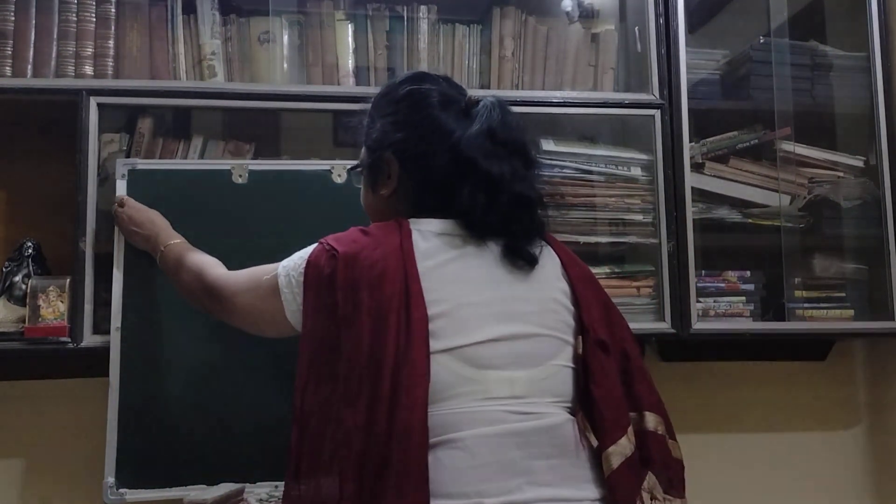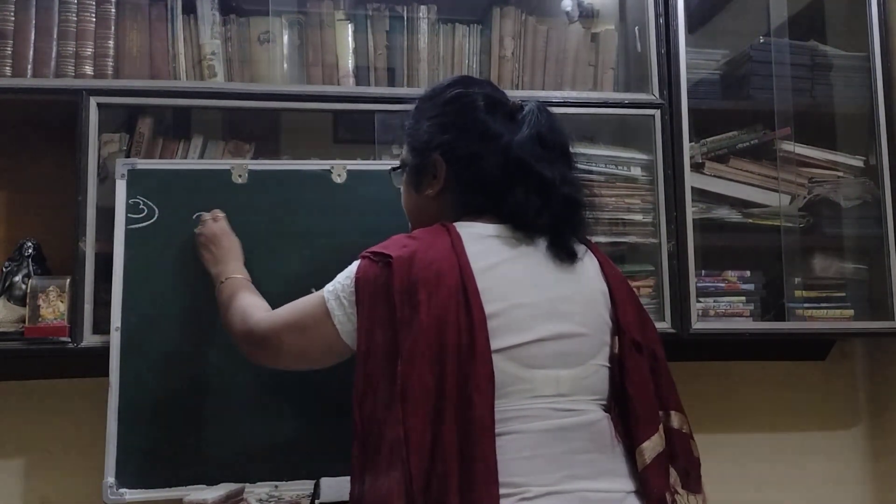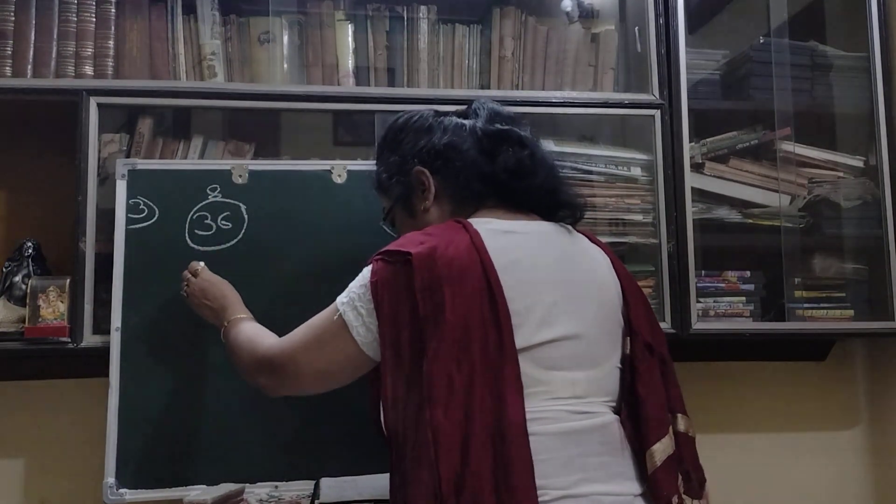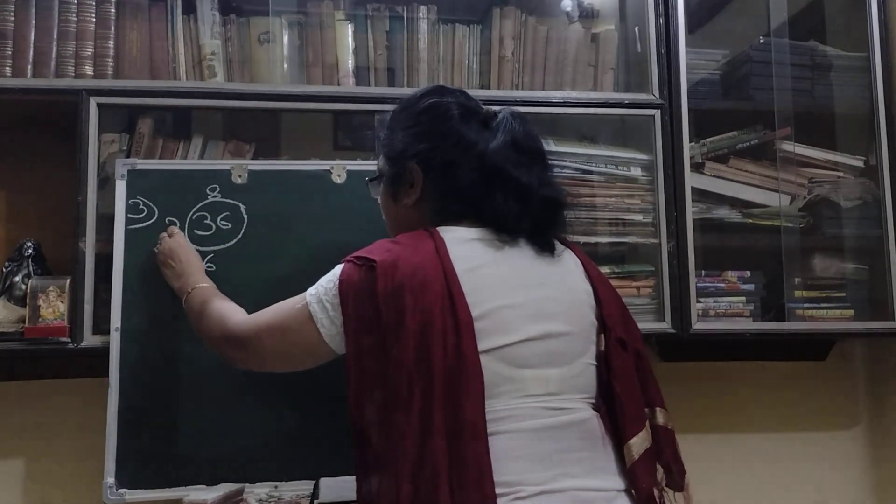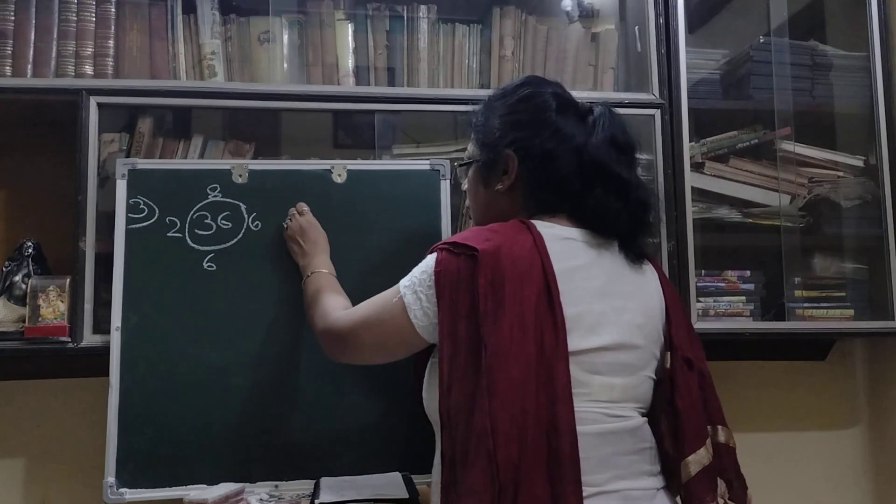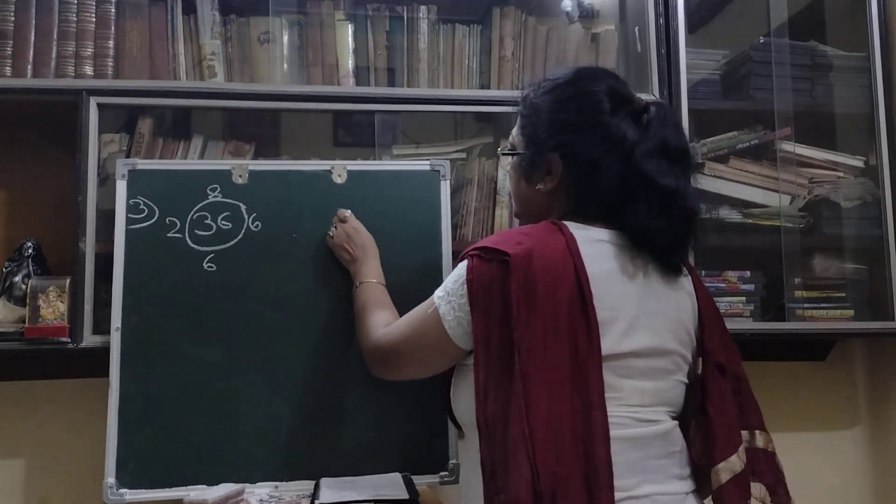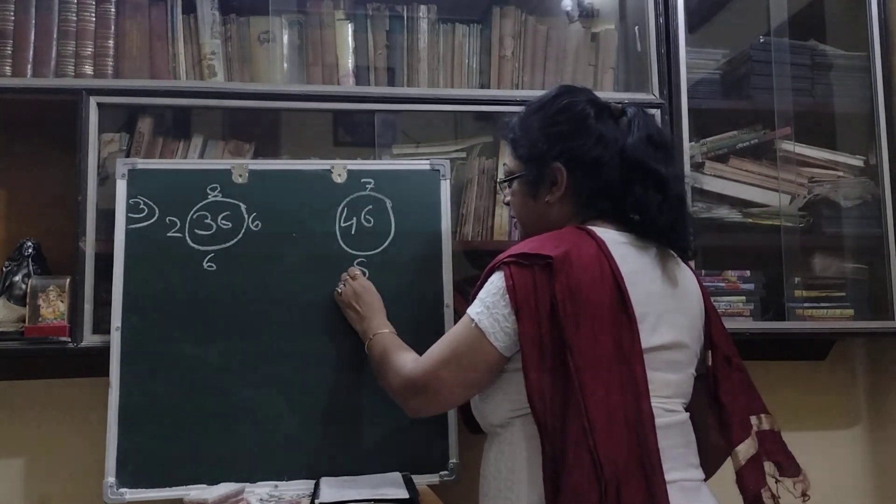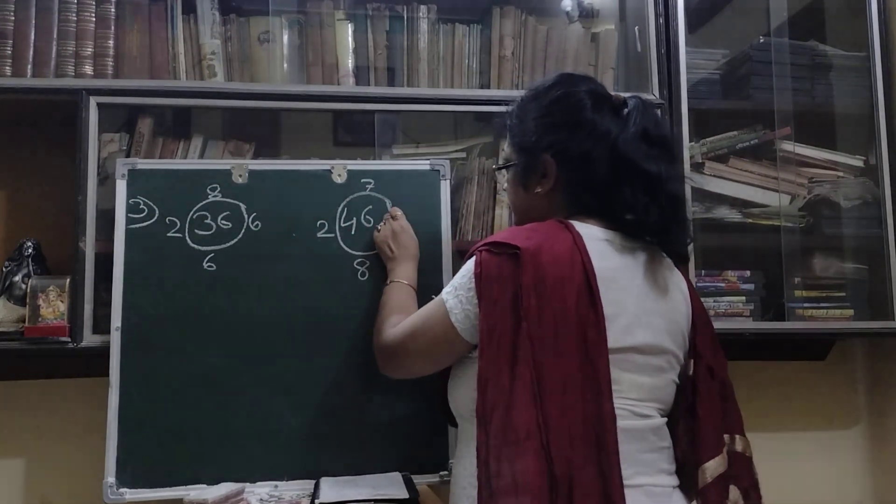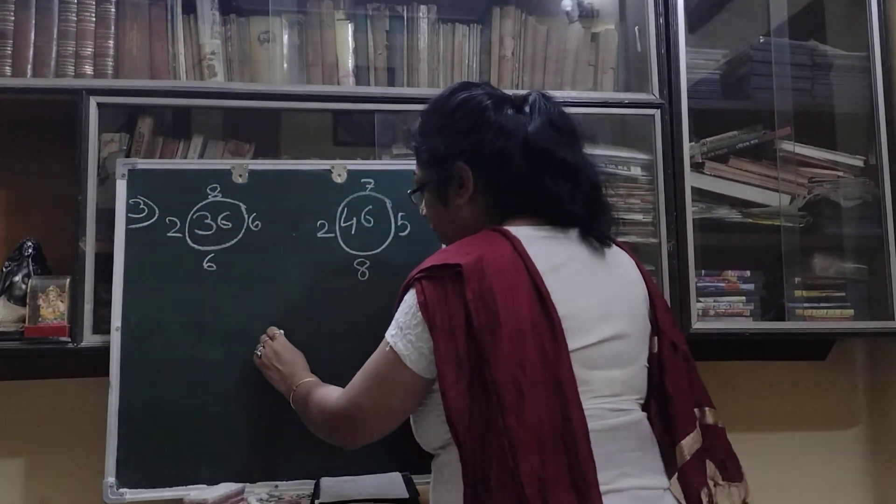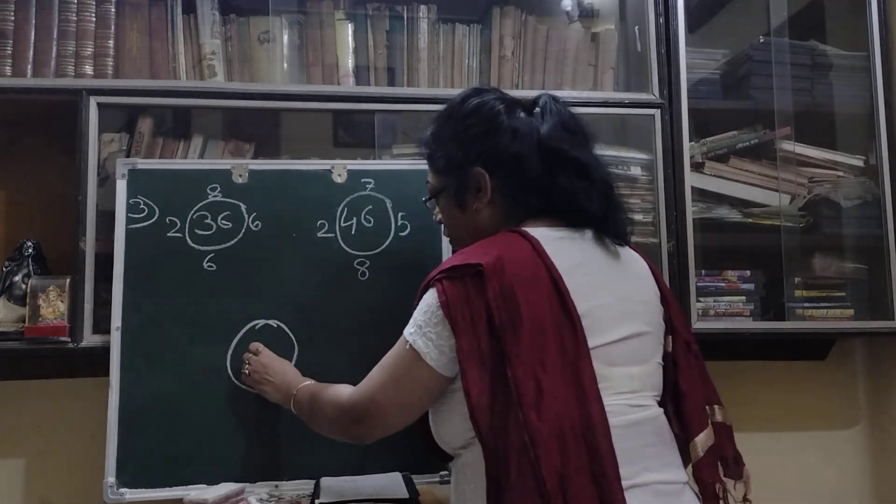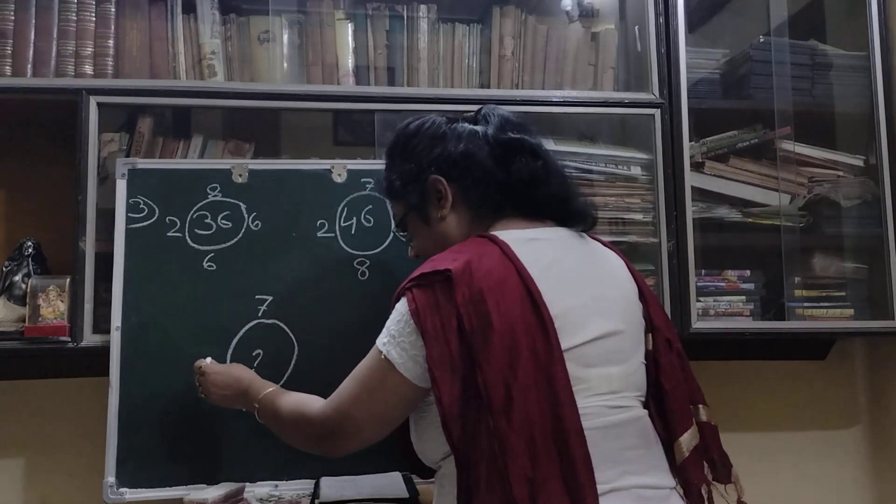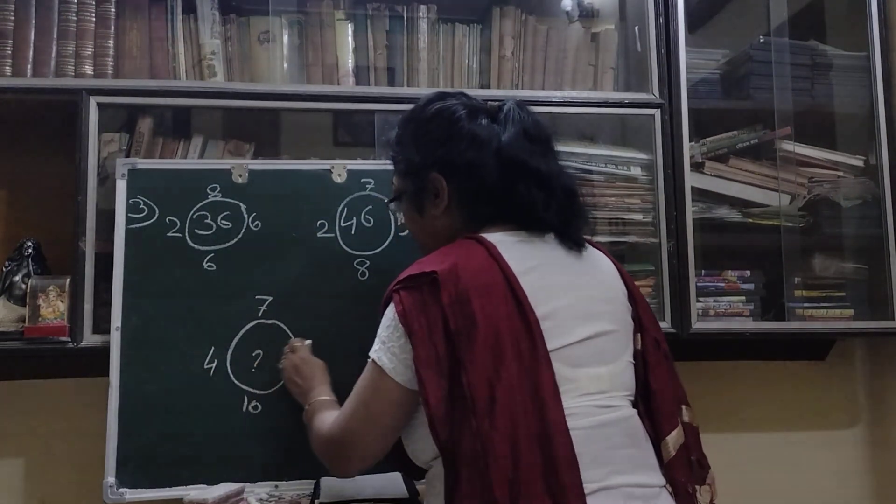Now I am doing the next one, number 3. 36 inside the circle. Now 8 and 6 and 2 and 6, 1, this one. Next one is 46 inside the circle and 7, 8 and 2, 5. So one more we have, one more we have that we have to find. Definitely we will find out what number is there inside the circle, and here it is 7, 10 and 4, 6, 4 and 6.